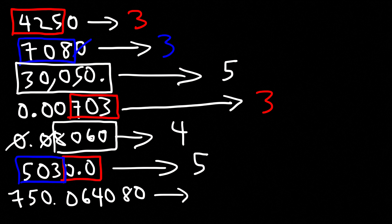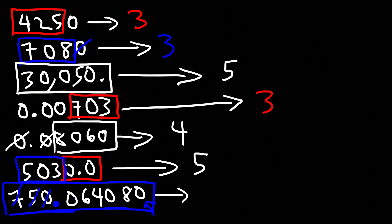For the last example, 750.064080, all of the zeros in between the non-zero numbers are counted. And since we have a decimal point, the trailing zero is also counted. So everything is counted in this example — one, two, three, four, five, six, seven, eight, nine — giving nine significant figures.